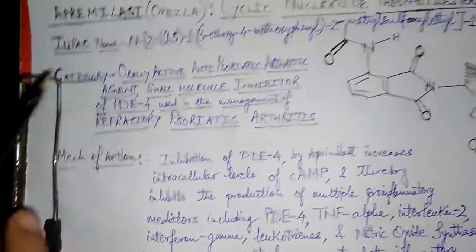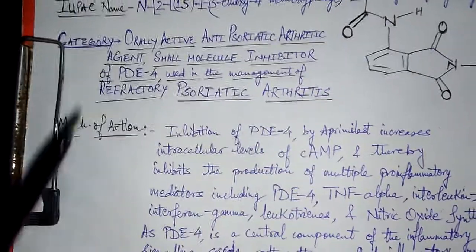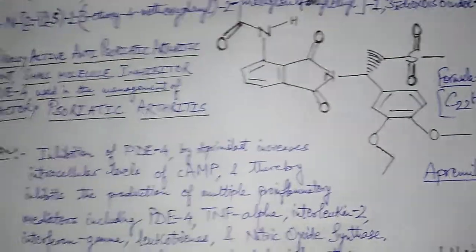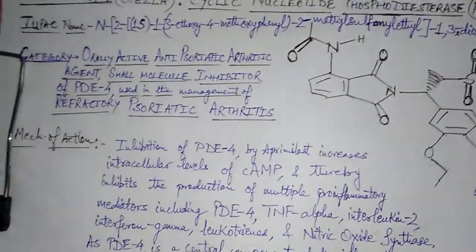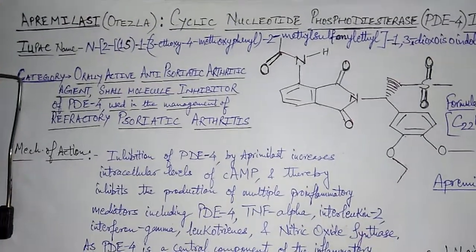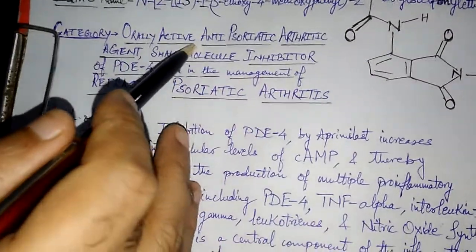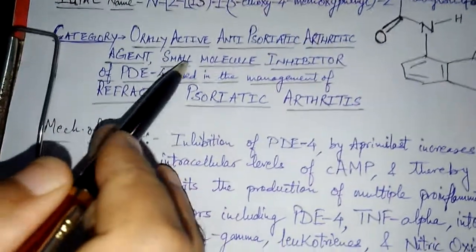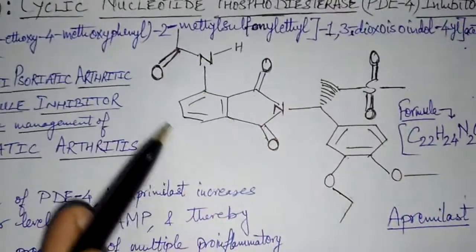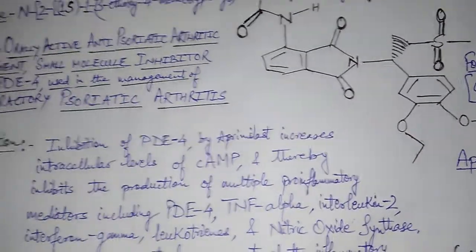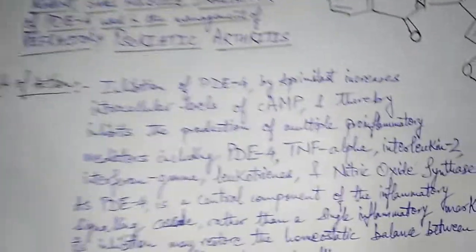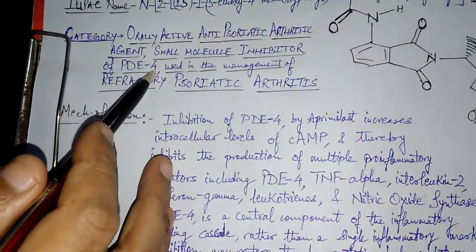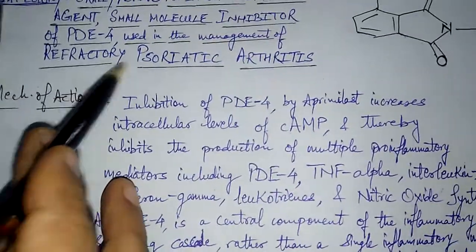Looking at the pharmacological category and classification of this drug: it is an orally active, small-molecule inhibitor of PDE4, used in the management and treatment of refractory psoriatic arthritis. The best part of this drug is that it does not need to be given via the parenteral route — it can be administered orally. Being a small molecule drug is advantageous as it exerts minimal load on internal organs, especially the kidneys and liver.